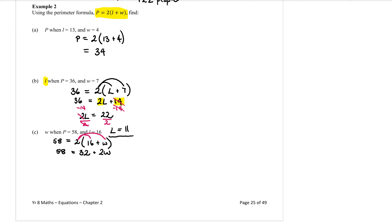Now I want to move the 2 numbers away from the w — there's a 2 and there is a 32. The first one I need to move is 32. Because it's positive, I need to subtract it from both sides. We put the 2w on the left, and 58 minus 32 which is 26 on the right. Now I need to get rid of the 2 — because it's multiplied, the opposite is to divide by 2. Cancel that off. W is now by itself. 26 divided by 2 makes 13.